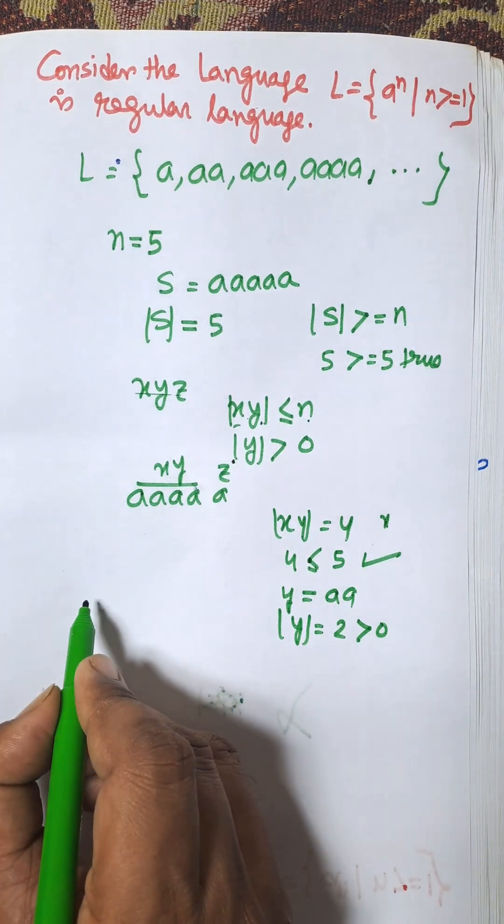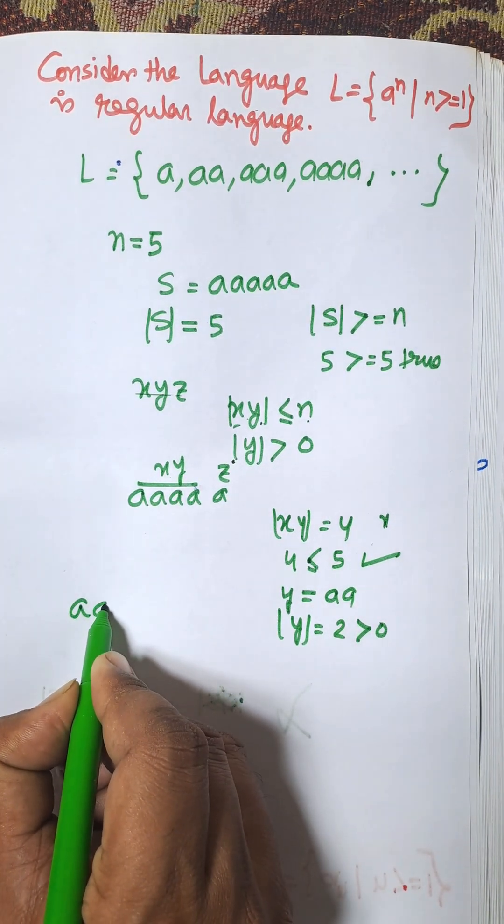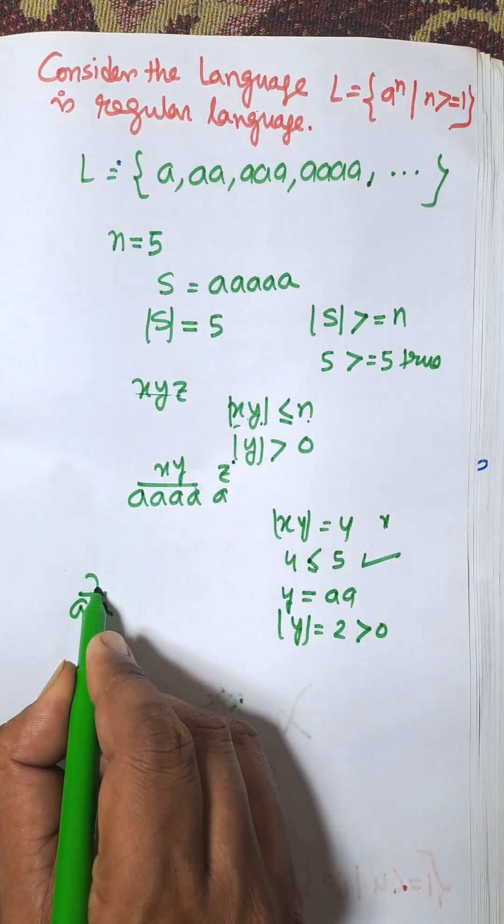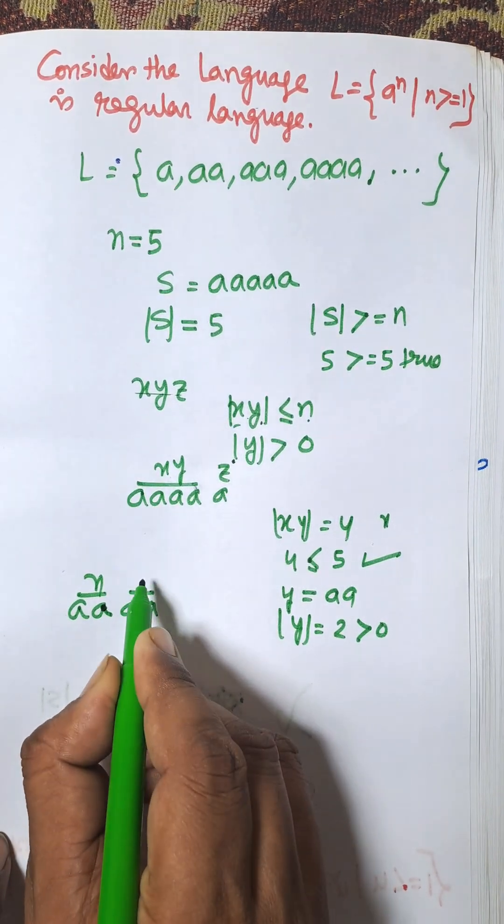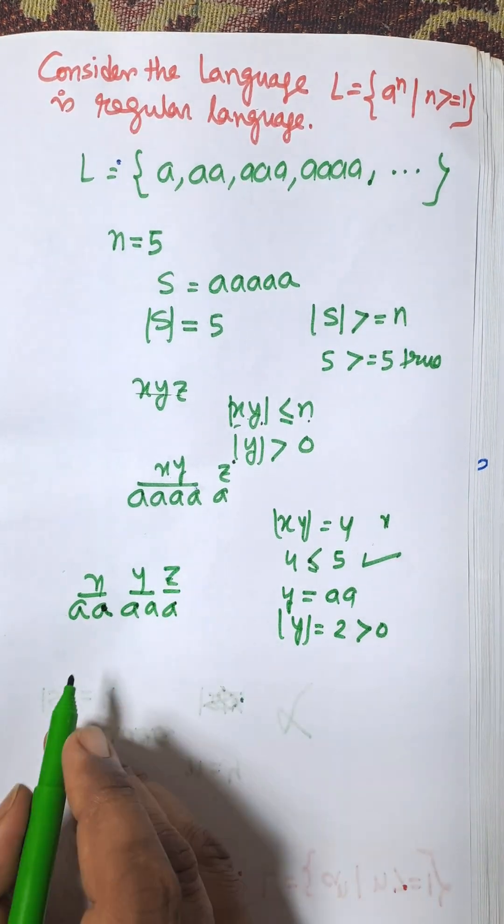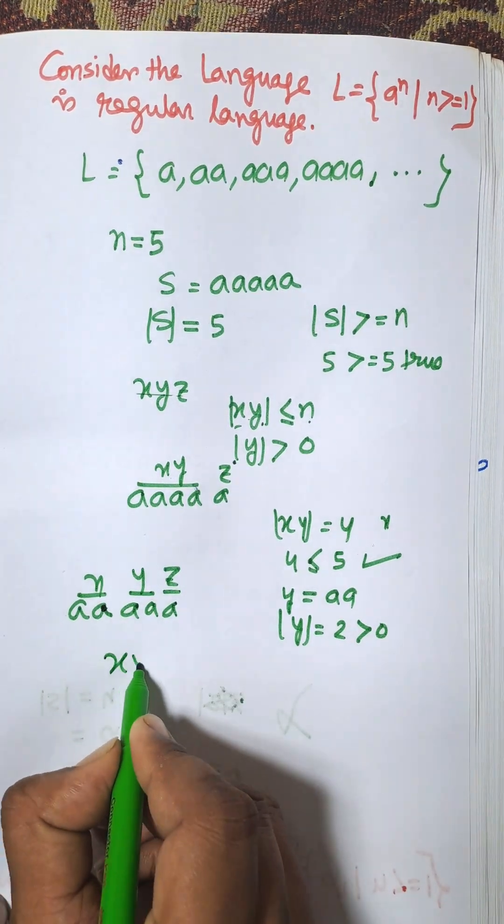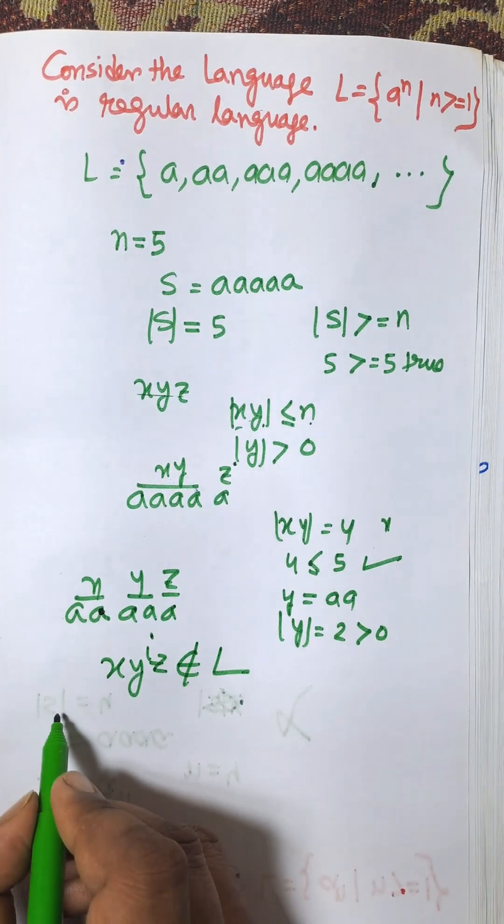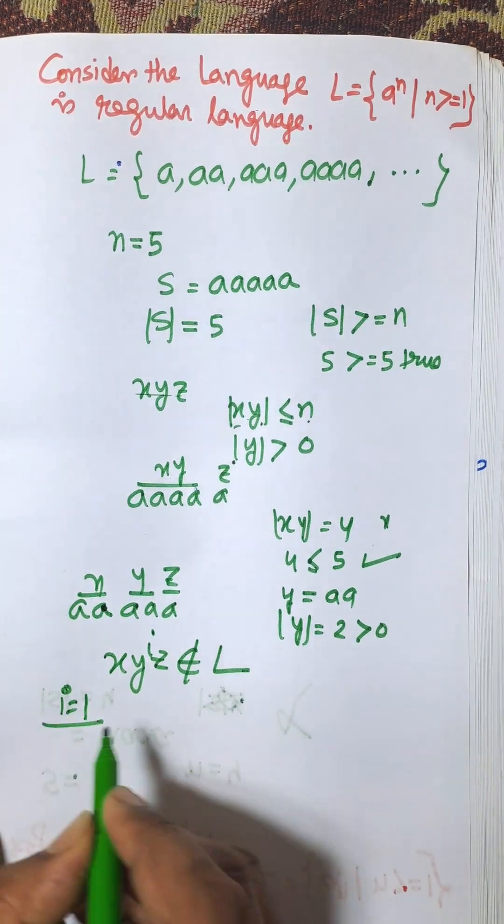So this one is x, this one is y, and this one is z. Now we need to find an i such that xy^i z belongs to L. Considering i = 1, then xy^1 z = a^5.